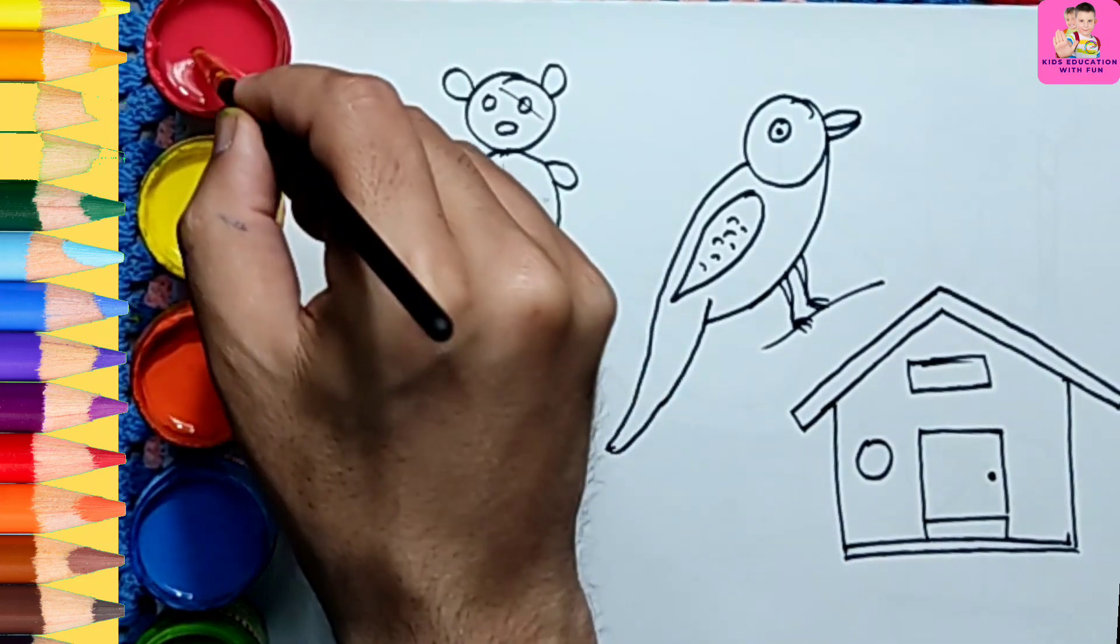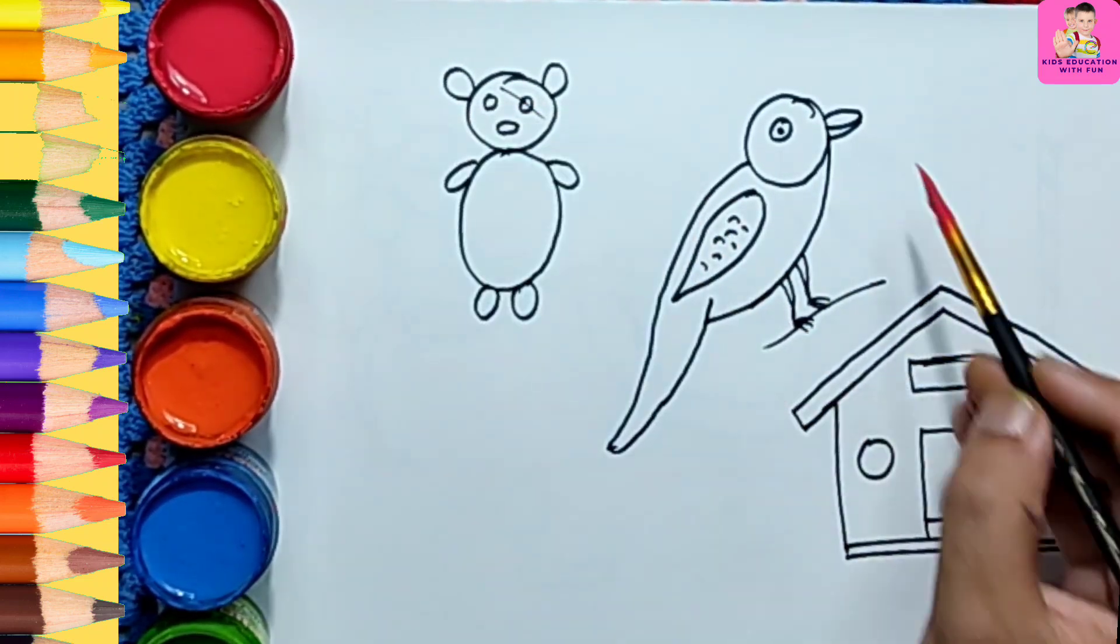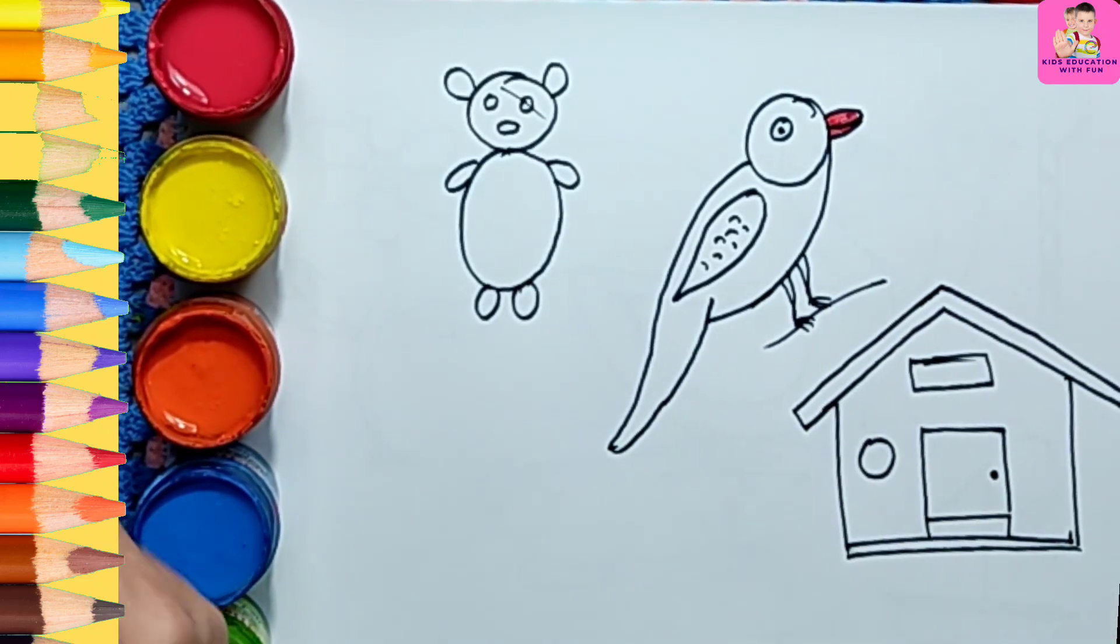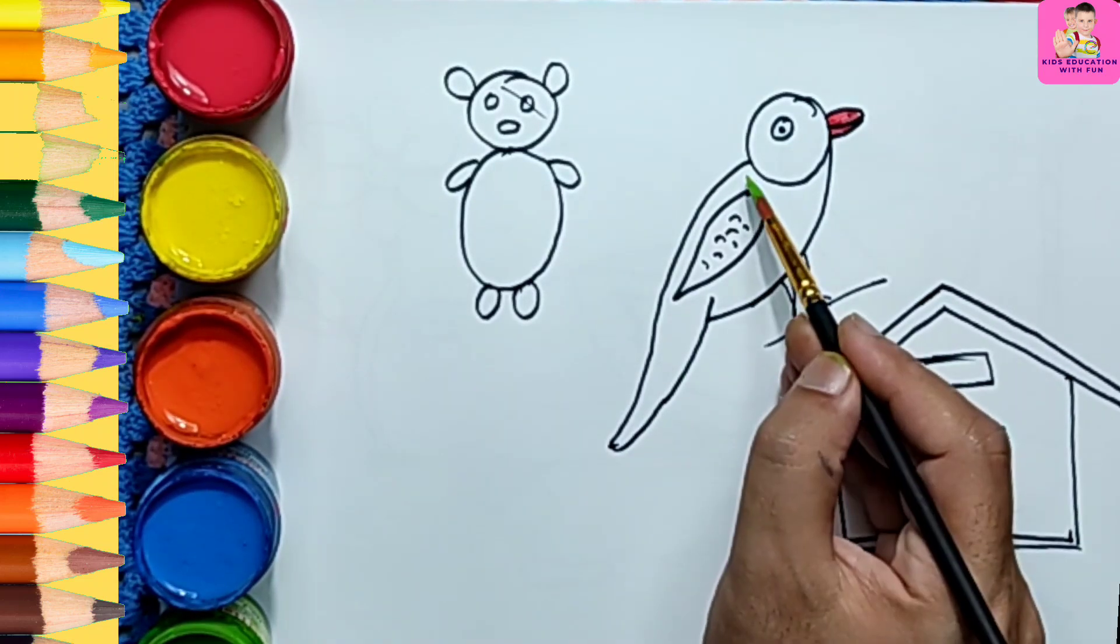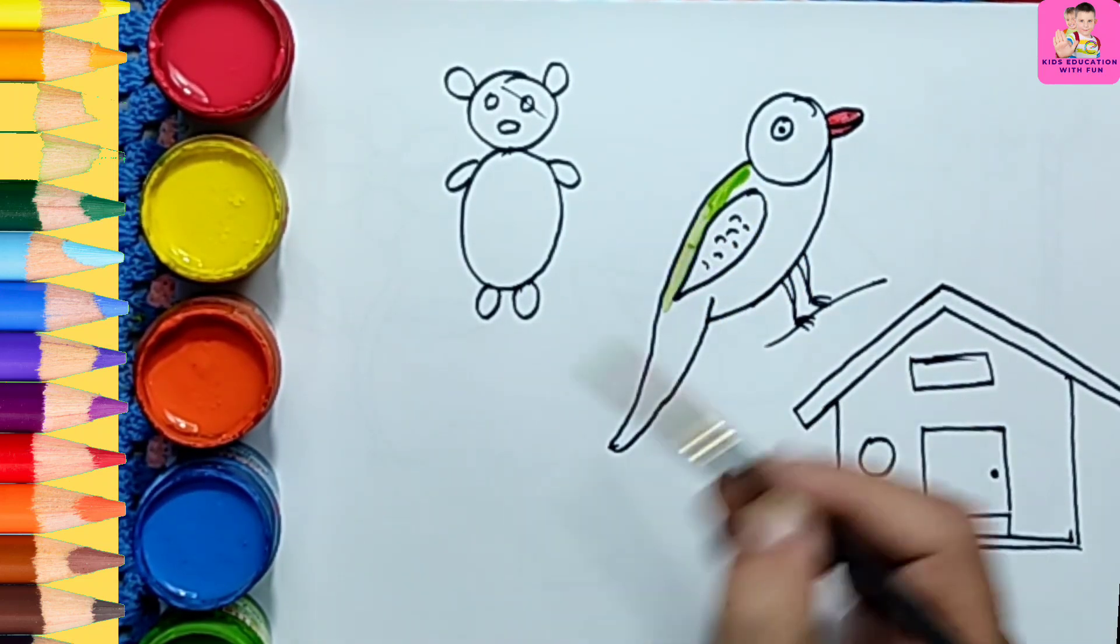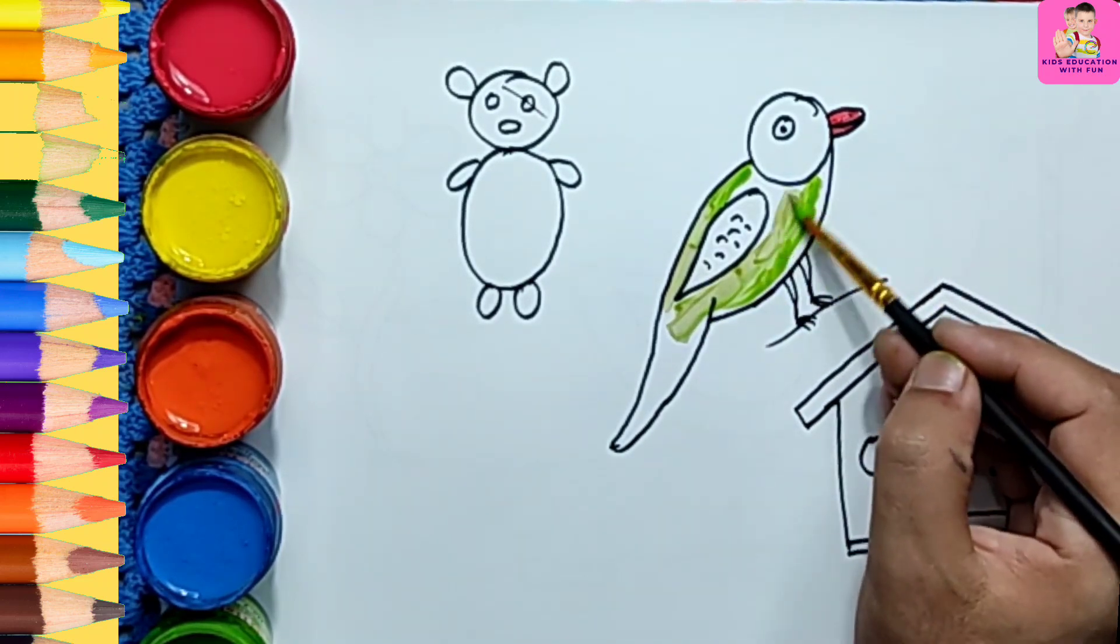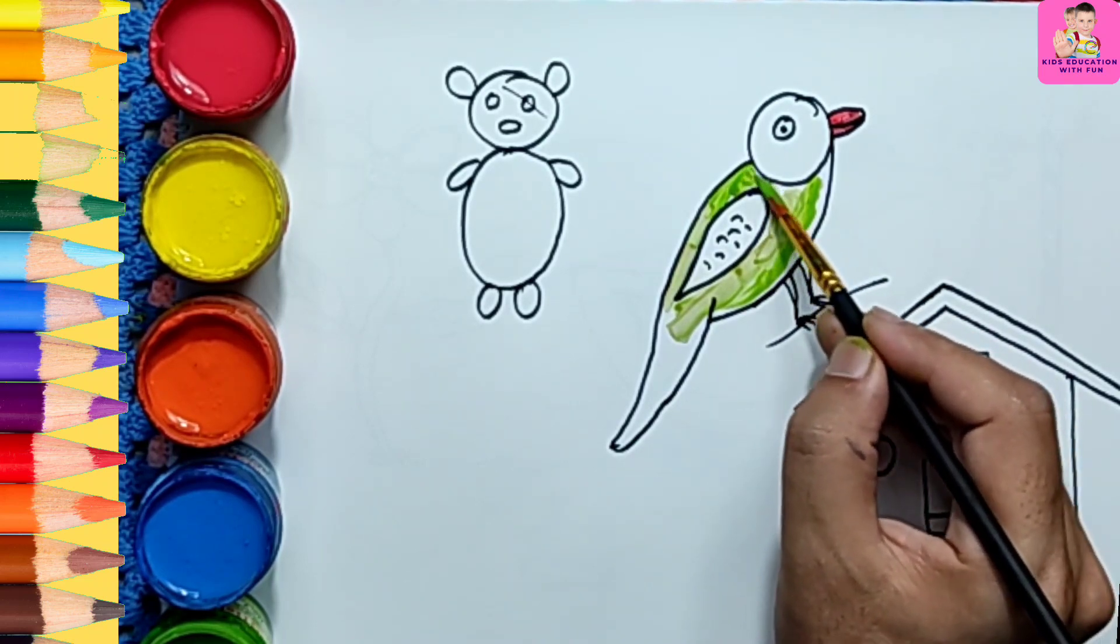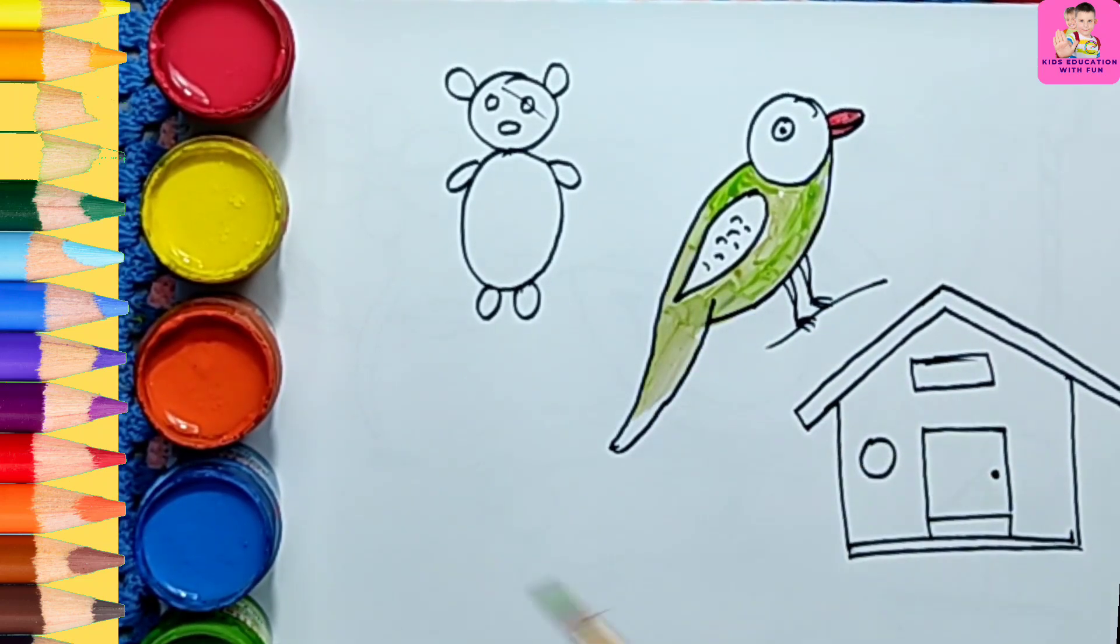Let's color this parrot. So let me just make it red. And what about the color of the wings? So it is green.